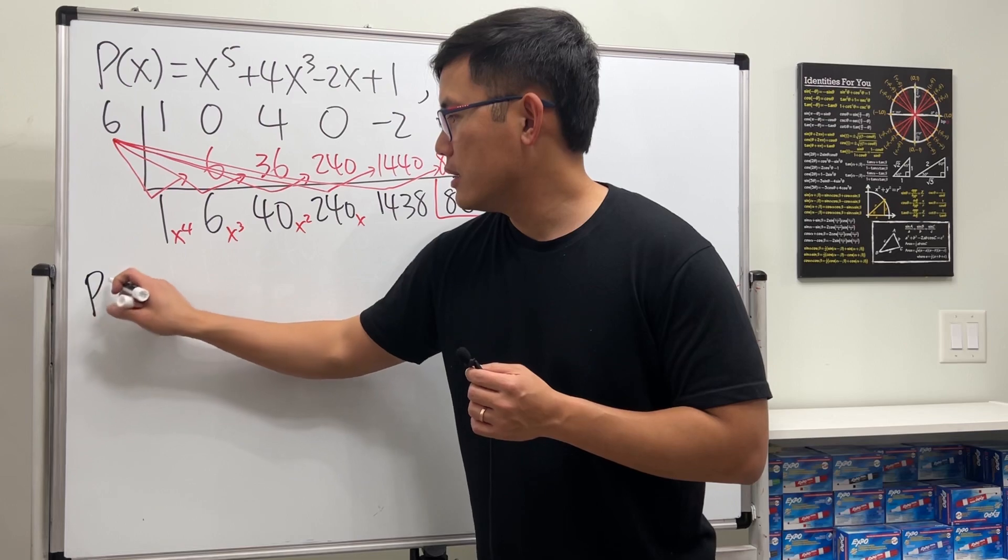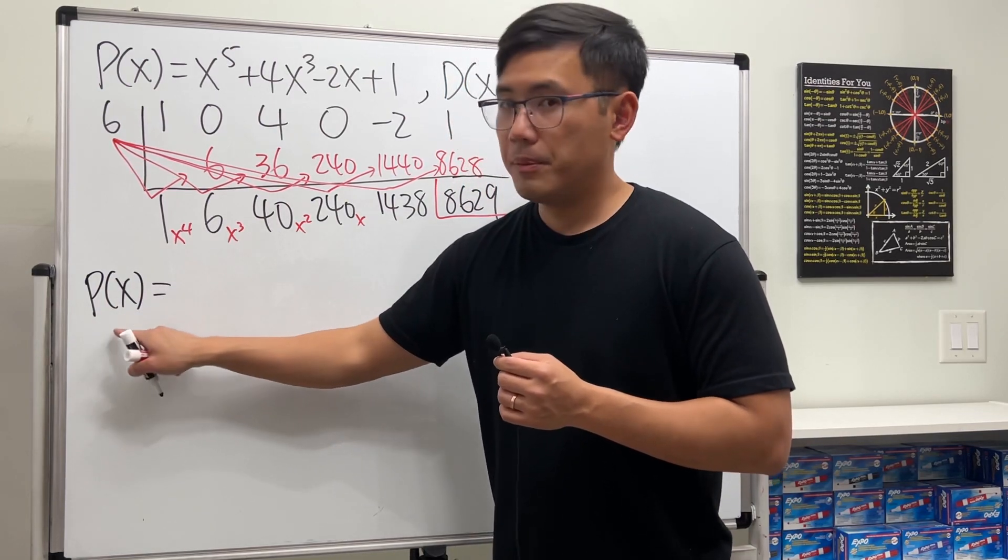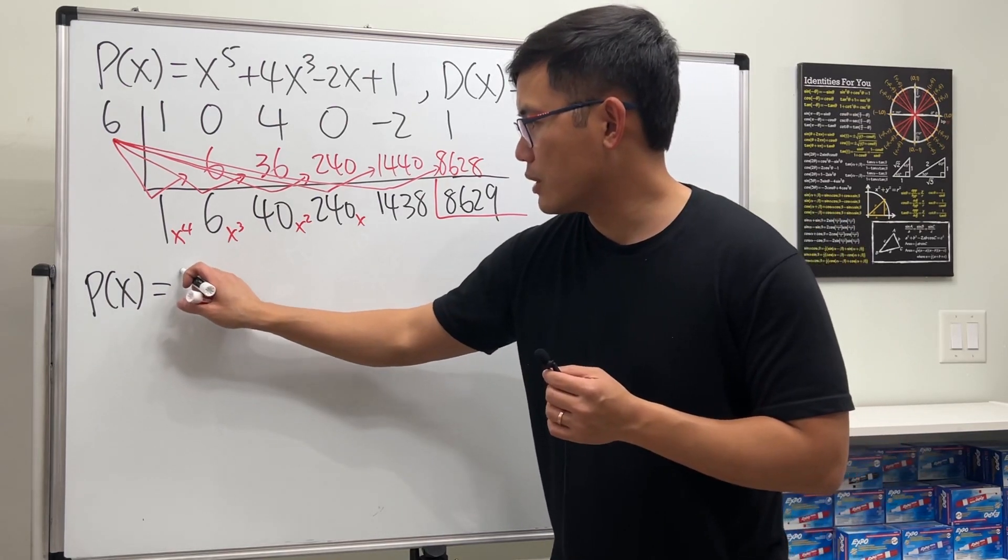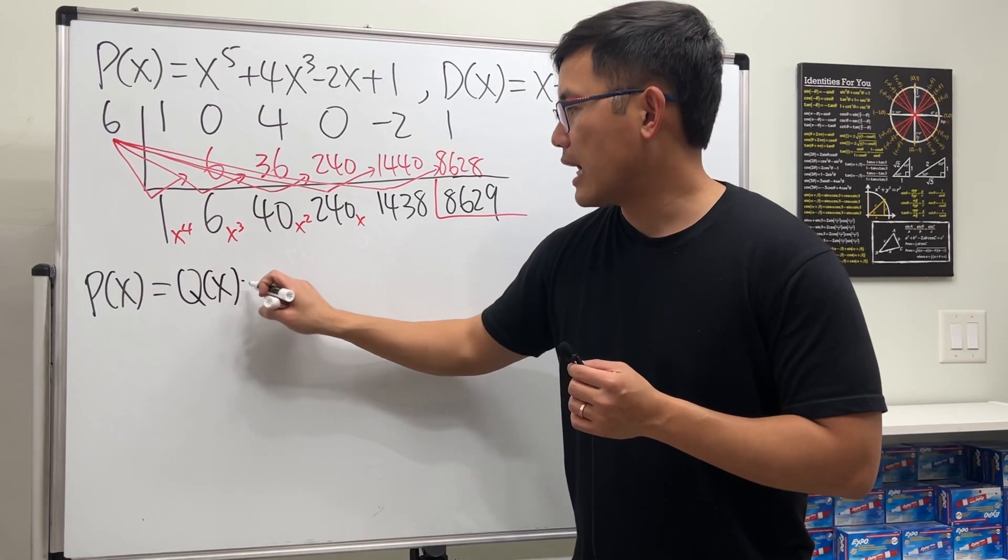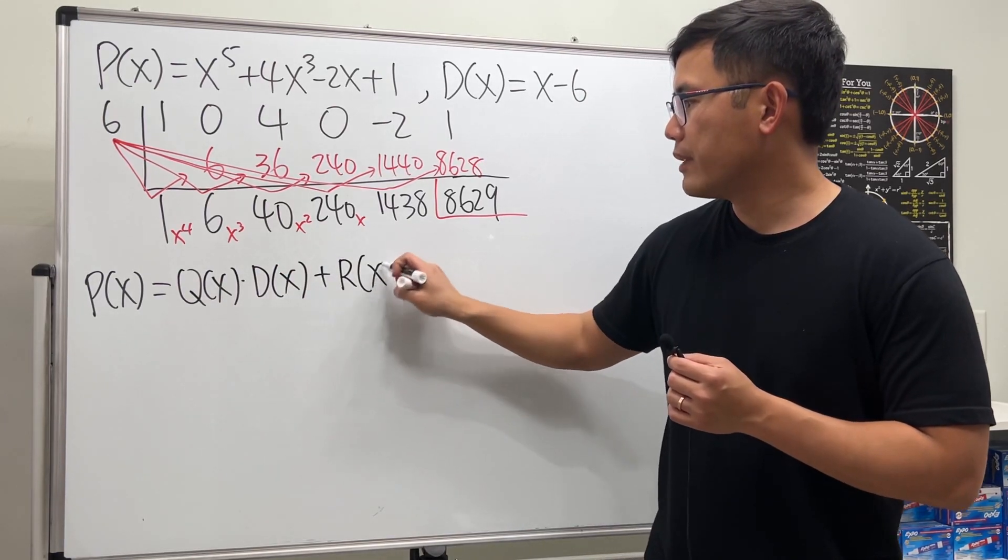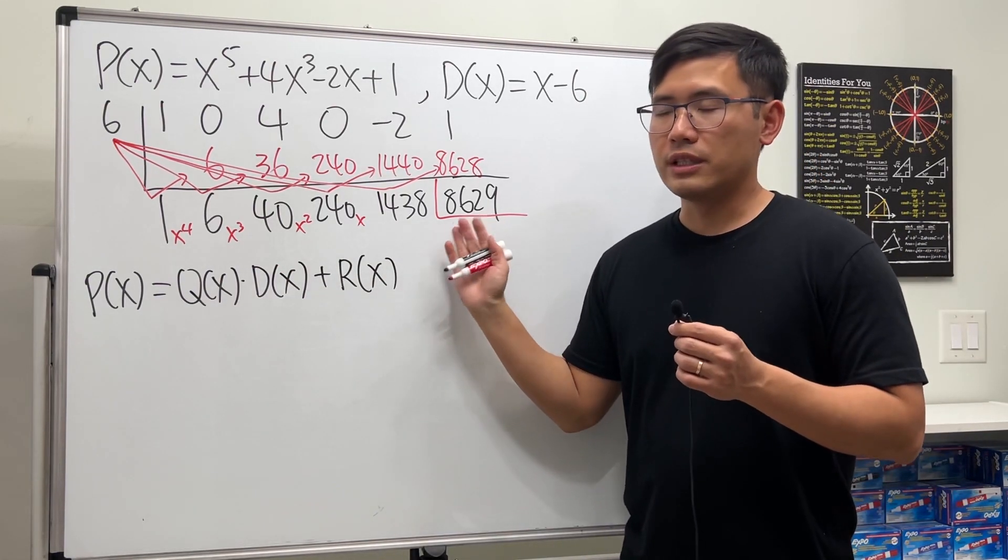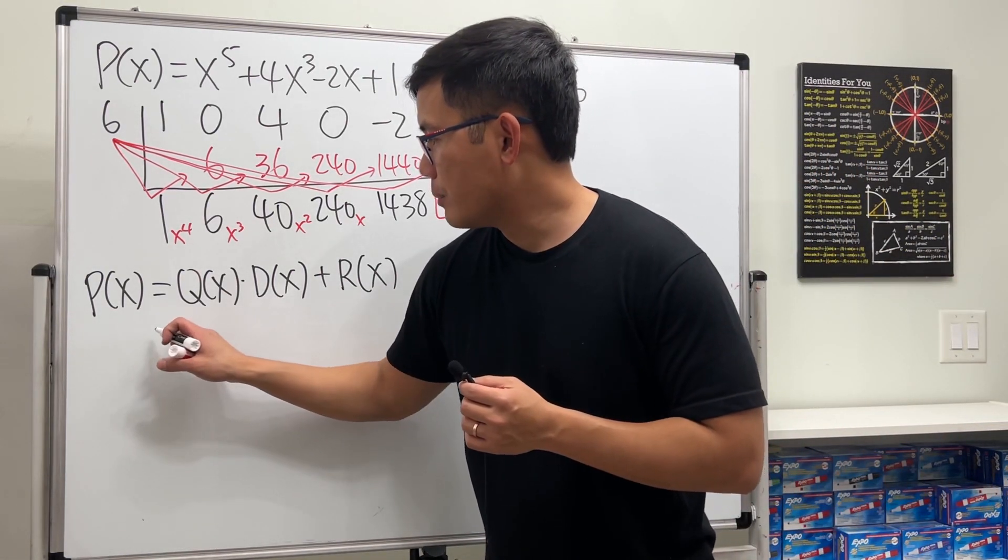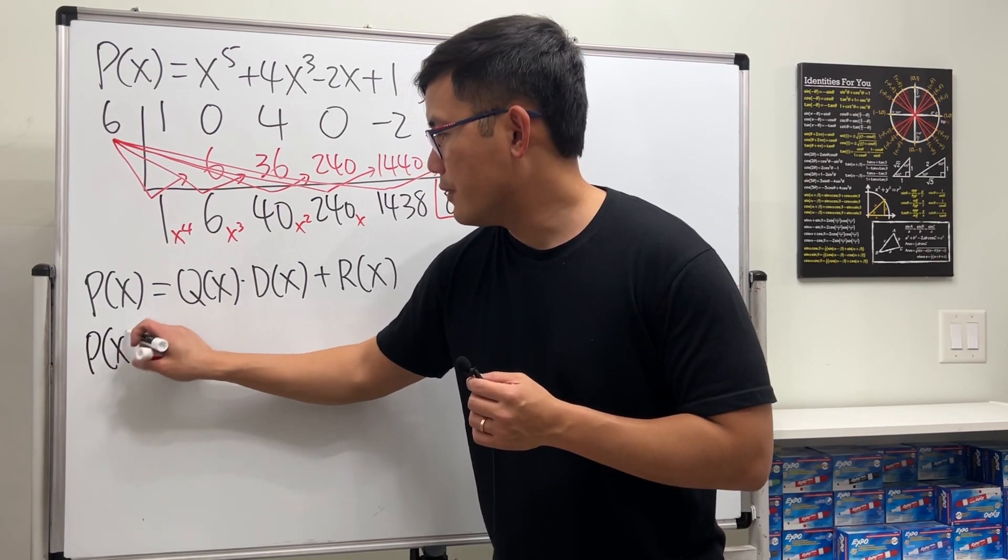We'll write the answer in this form for this question: P(x) equals the quotient—I will just do this—quotient of x times the divisor, and then plus the remainder. In this case, remainder is just a number, but we'll write it as R(x). But anyway, though, so we will just have P(x) being equal to Q(x).